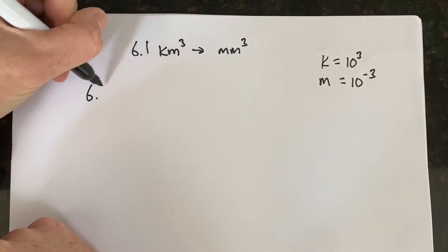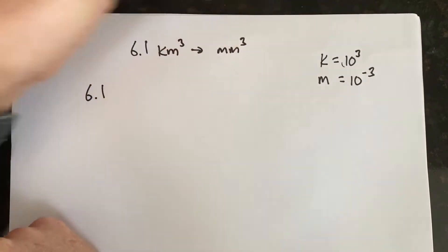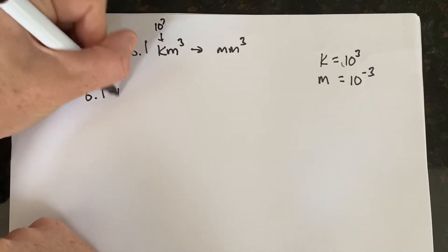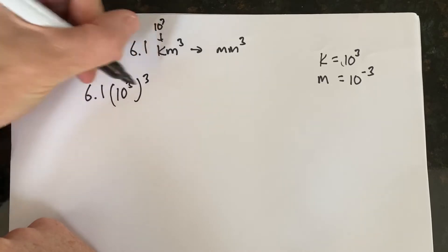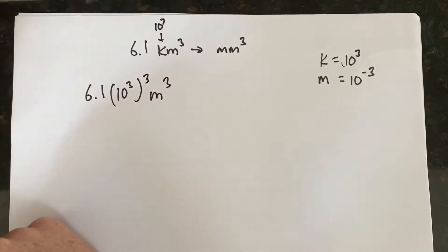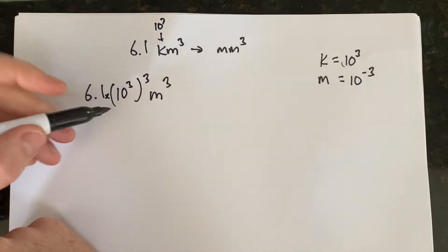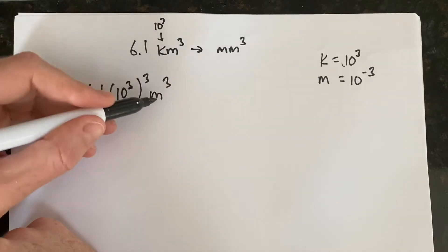So remember, we've got 6.1 kilo we're going to replace with 10 to the third. So we're going to essentially replace that with 10 to the third. But it's cubed, right? So it's 10 to the third cubed meters cubed. So we've got 6.1 times 10 to the third cubed meters cubed.